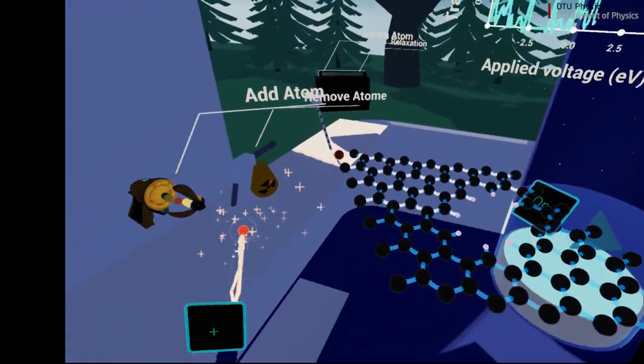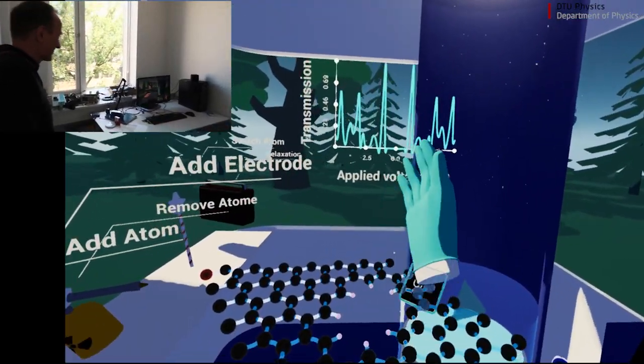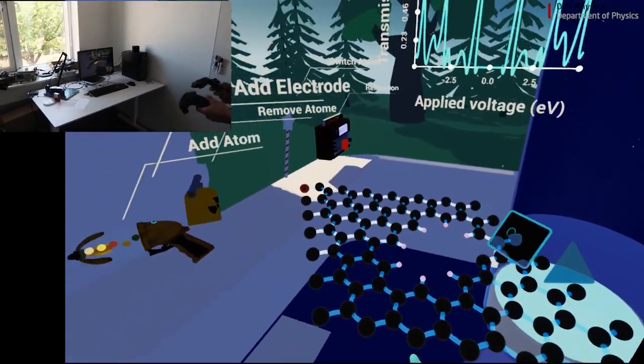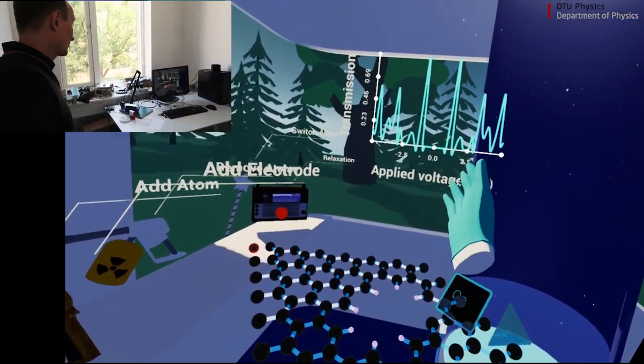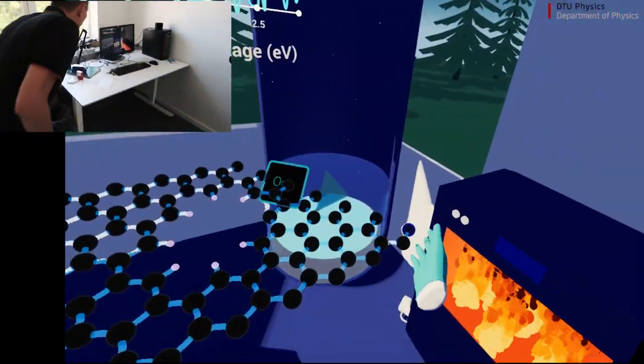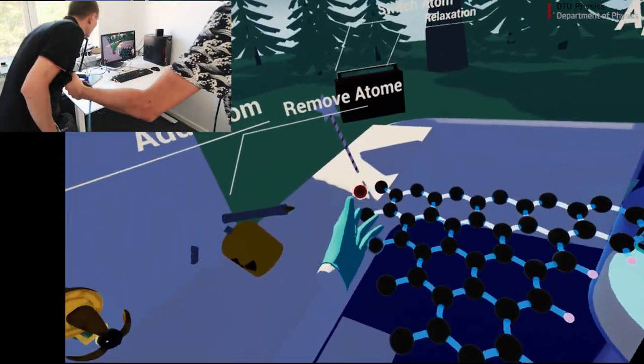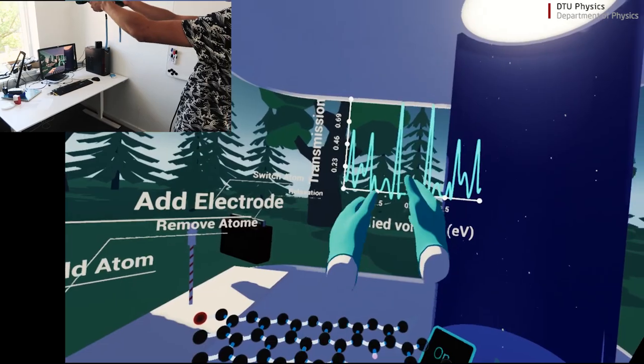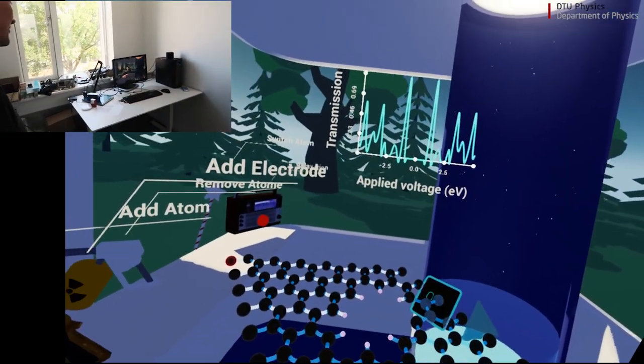And right away, if I put some electrodes, I can start seeing some transmission. Can you measure? Can you put electrodes in this? Will it work? Yeah, this is actually what I just did. This is like the negative electrode, and this is the positive electrode right there. And this is the applied voltage.